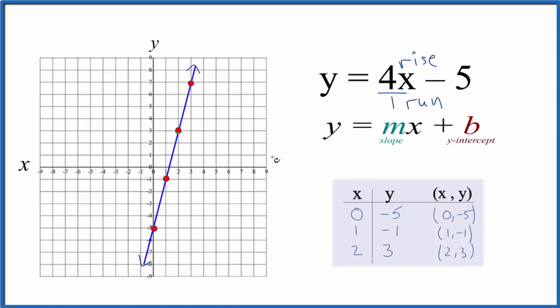And there's our line. We did the first part correctly. This is the graph for y = 4x - 5. This is Dr. B, thanks for watching.